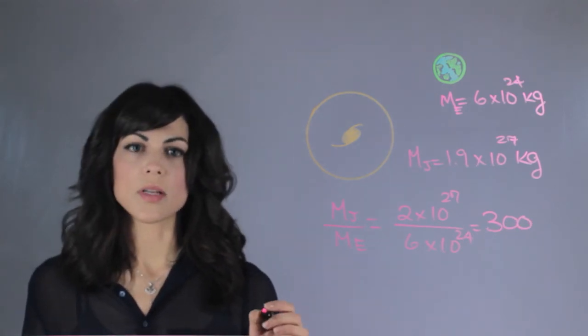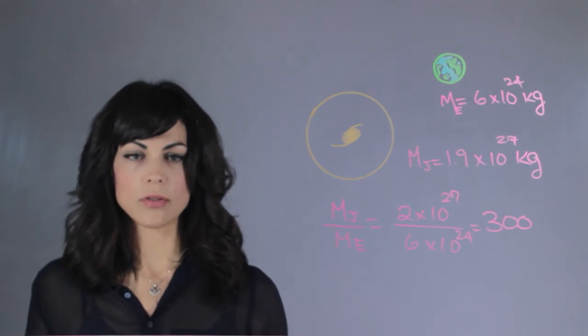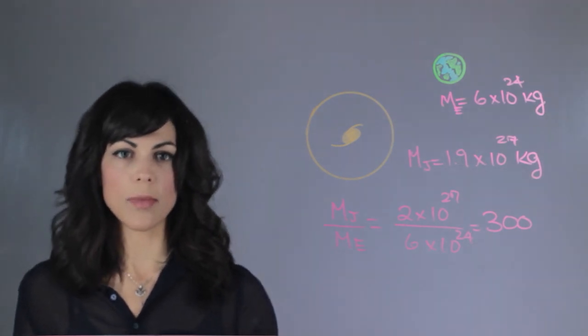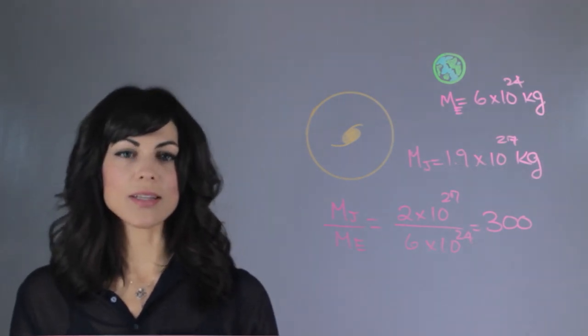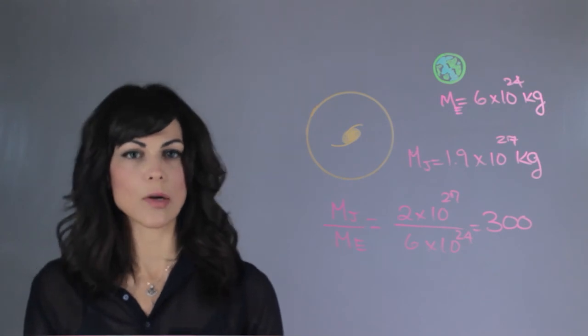So that means that Jupiter is about 300 times the size of the Earth. So therefore, Jupiter has the higher mass. My name is Eylene Pirez, and I'm an astrophysicist, and this is which planet has the higher mass, Jupiter or Earth?